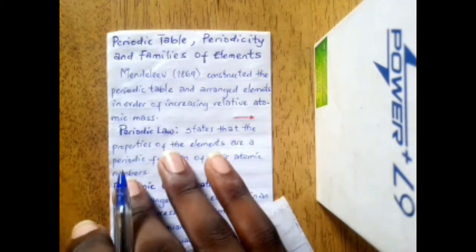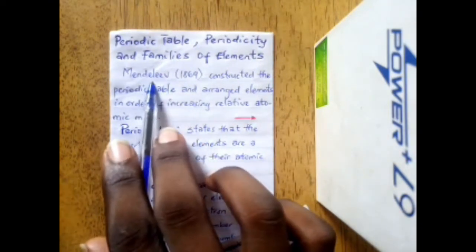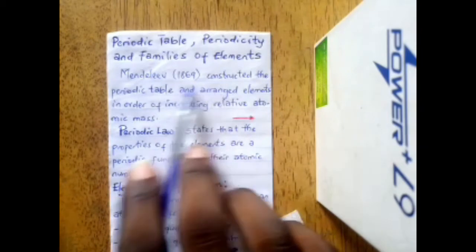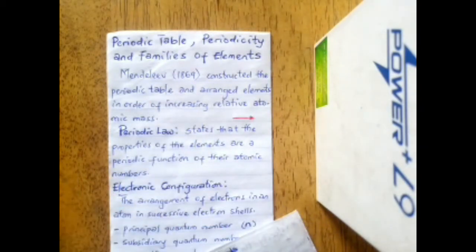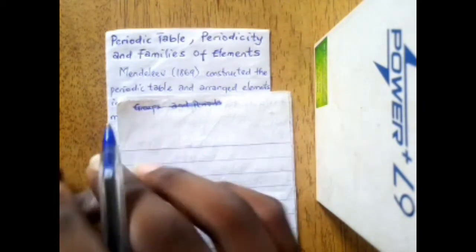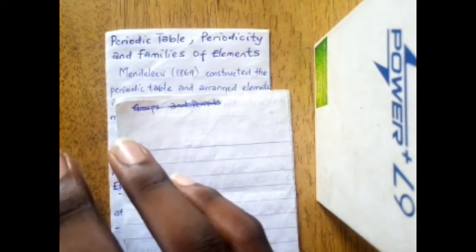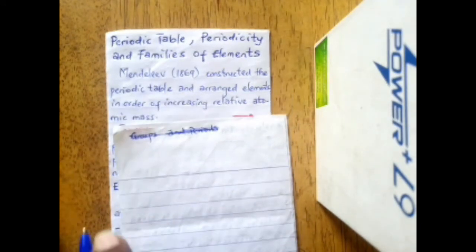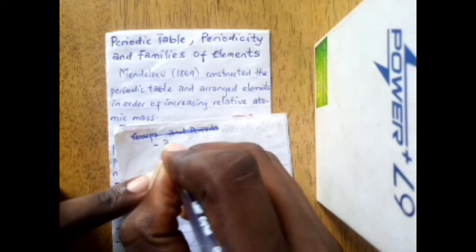Today we'll be looking at how to group elements into various families, groups and periods in the table. In 1869, a Russian scientist known as Mendeleev constructed the periodic table and arranged elements in order of increasing relative atomic mass. Mendeleev was able to group elements which had already been discovered into a table which we refer to as a periodic table, using the atomic mass.